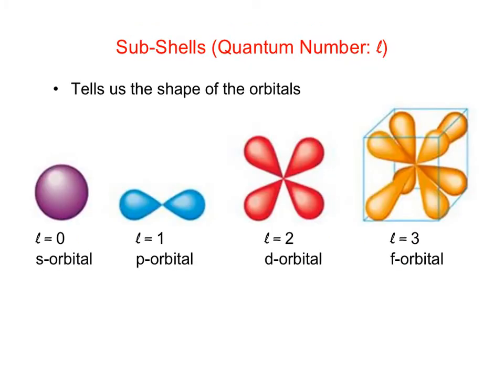The angular momentum quantum number L tells us about the shape of the orbitals. When L is equal to 0, that's what we call an S orbital, and S orbitals are spherical, like a basketball. When L is equal to 1, those are called P orbitals, and they look sort of like a dumbbell — like two balloons tied together in the middle, pointing directly apart from each other.